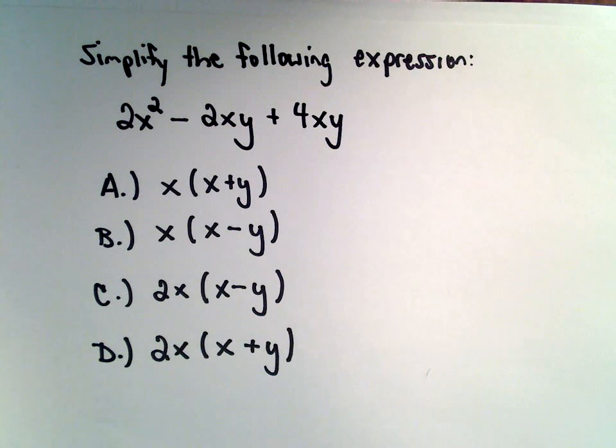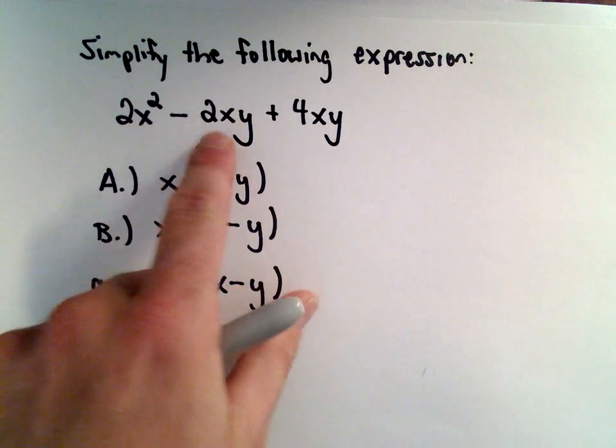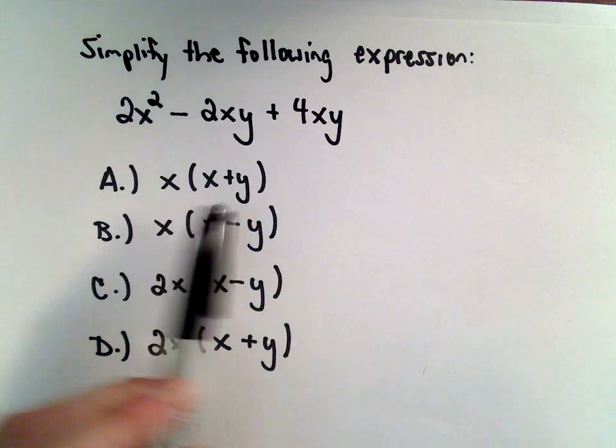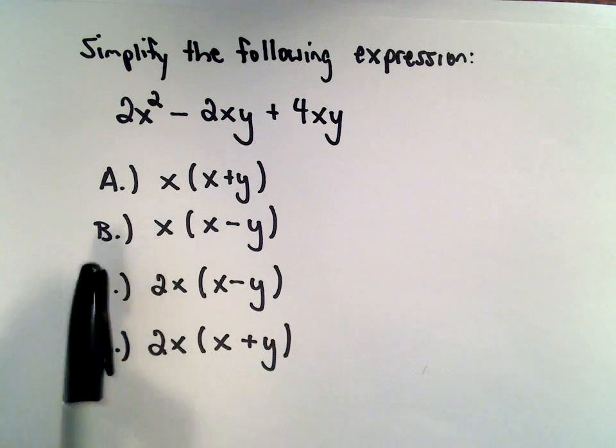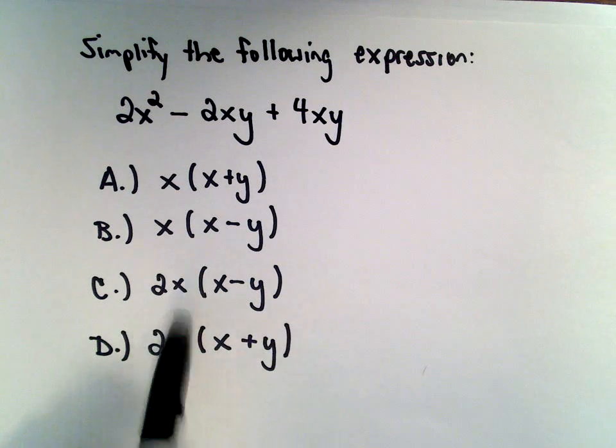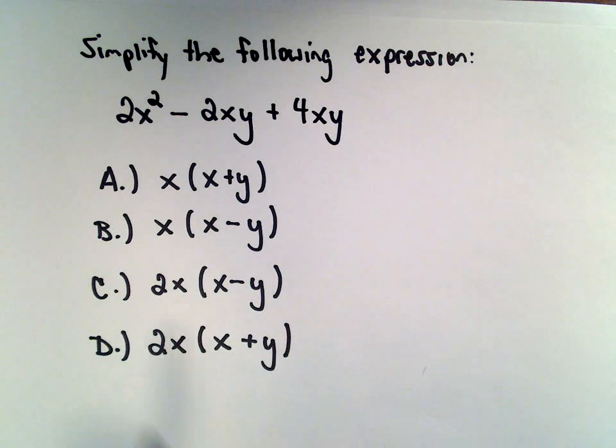Okay, in this example we're going to simplify the expression 2x² - 2xy + 4xy. And we've got four answer choices here. A says we'll take x and multiply that by x + y. B says we'll take x and multiply it by x - y. C says we'll take 2x and multiply that by x - y. And answer choice D is 2x multiplied by the quantity x + y.